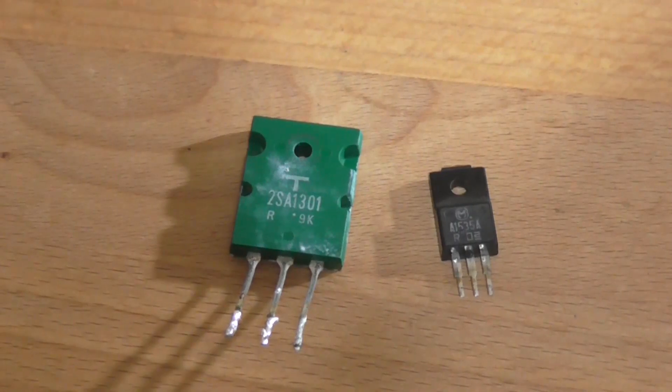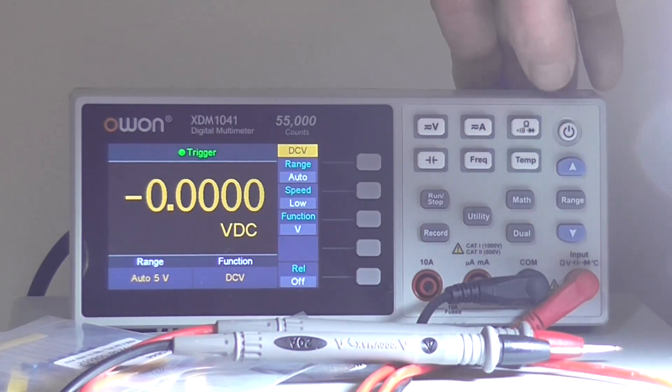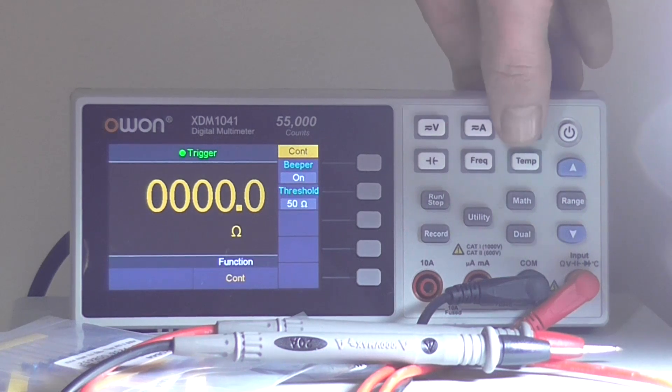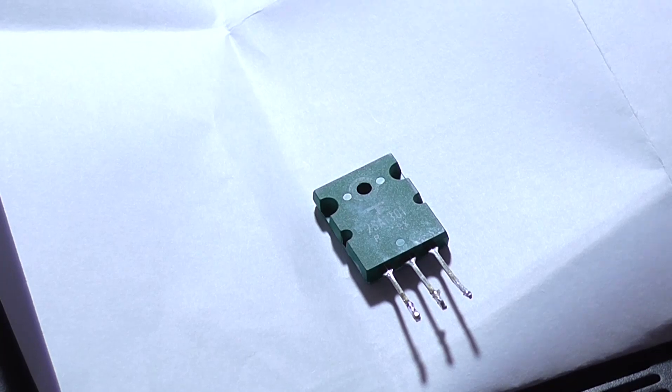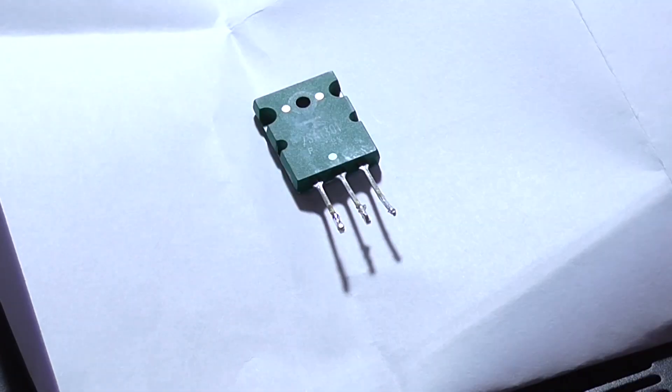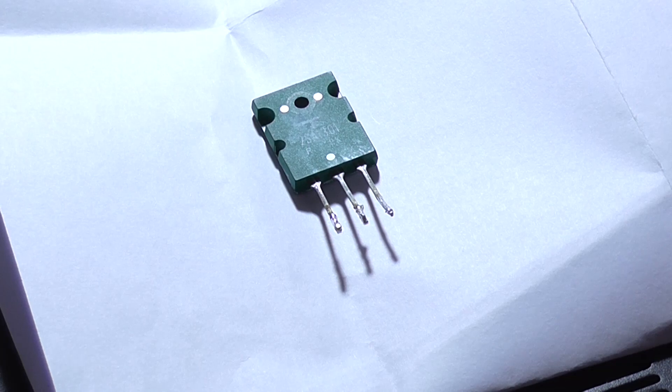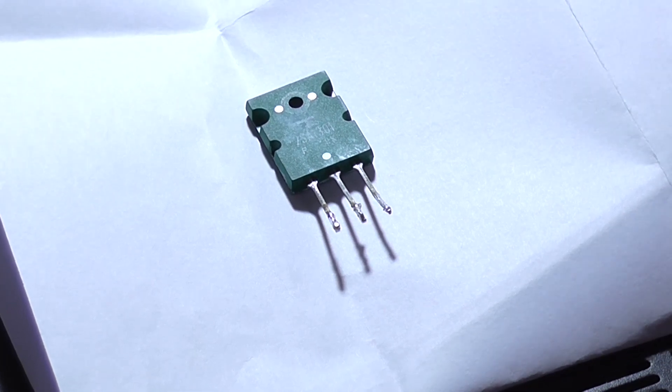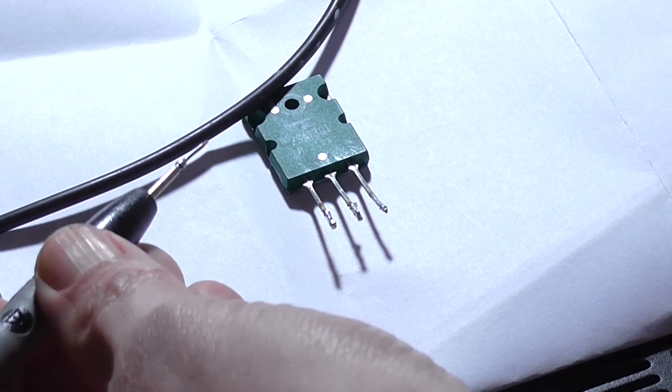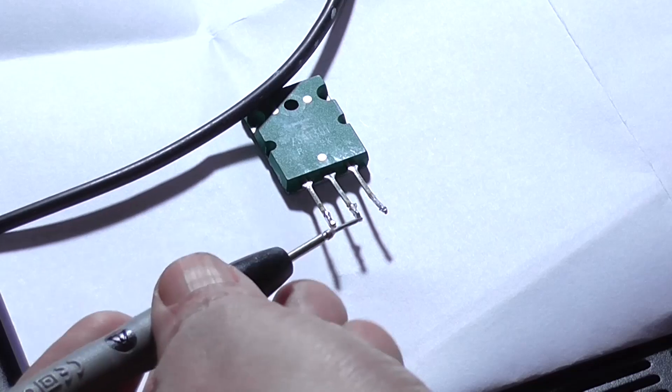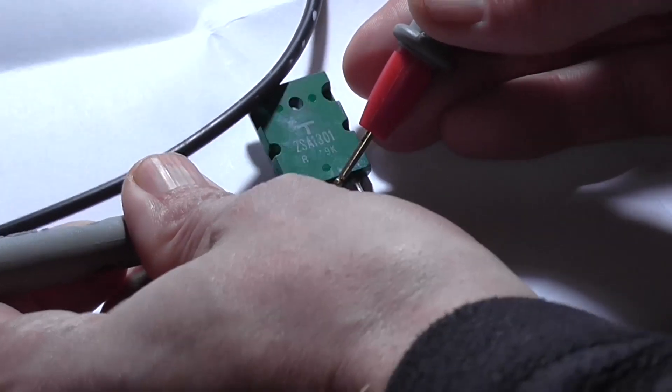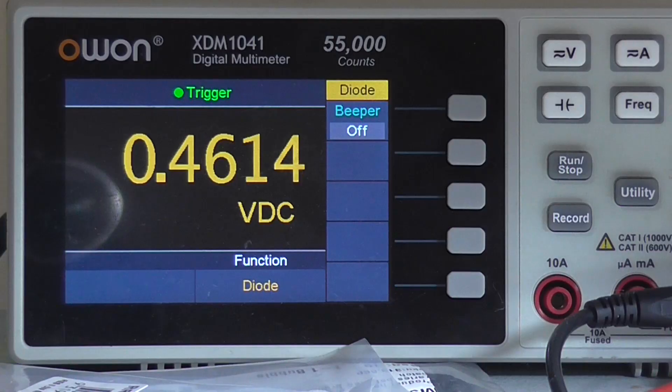So how do we test it? Well first we get our multimeter set to diode mode. And I will take my TO3P transistor. This one's actually a PNP, so that has a negative base. I've turned the beeper on the meter off because it is annoying, but it's handy to have it on to test for shorts. So negative on the base, positive on the collector. And if we look at the meter we can see we've got 0.461 of a volt there across base and collector.